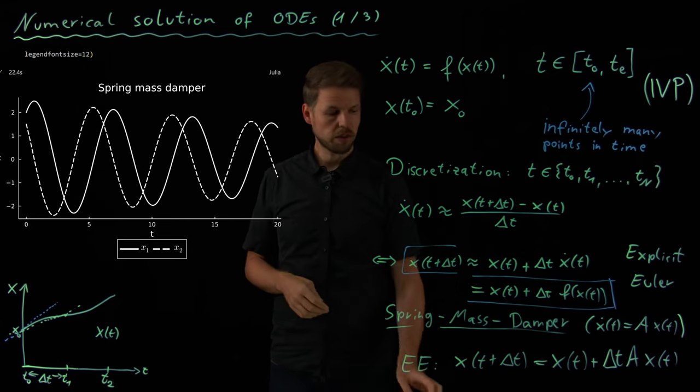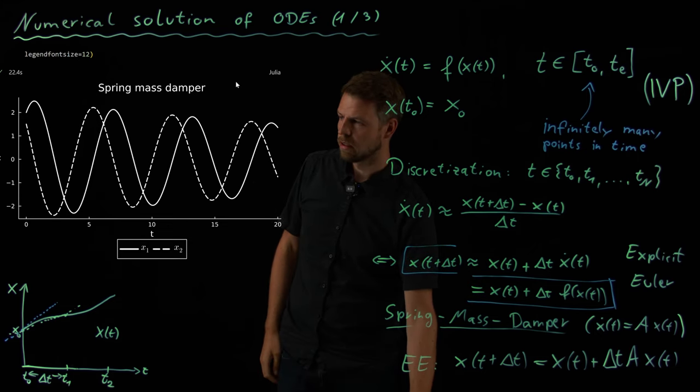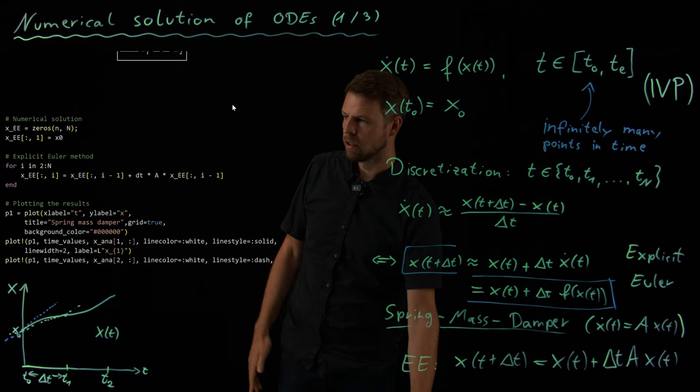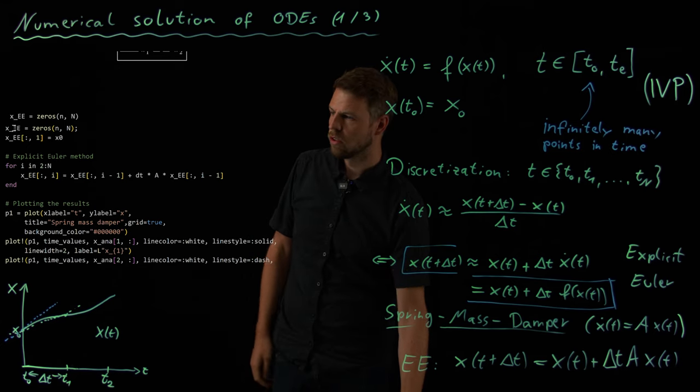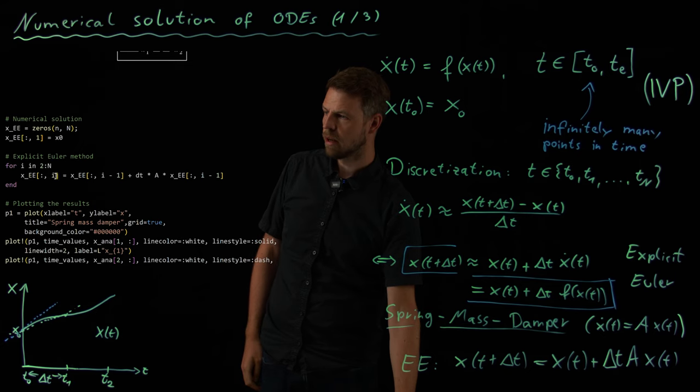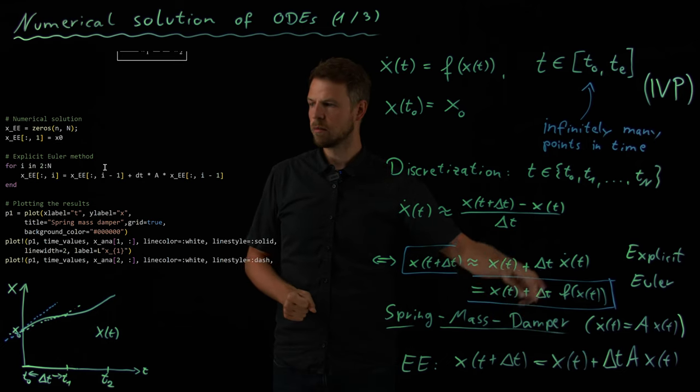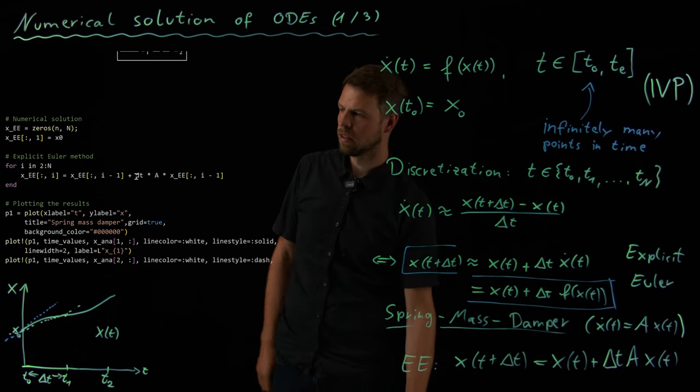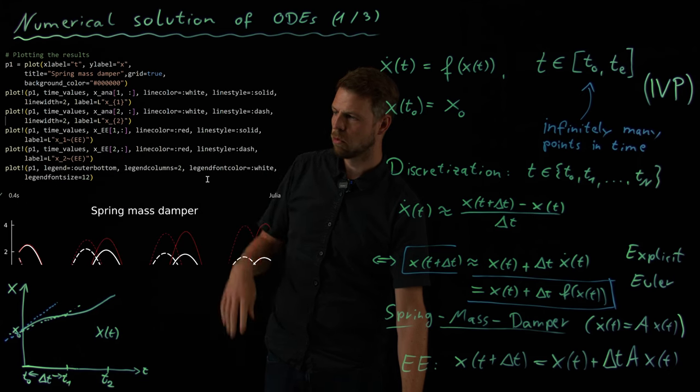And we also see this decay due to the damping. Okay, now let's compare this to the explicit Euler scheme, the one I have marked in blue here, where we see that actually the code is very, very simple. It's just one line, basically. So we have this XEE for the explicit Euler, where you see that the update rule is precisely what I've written here. We have the XEE at time step i is XEE at time step i minus 1 plus, this is the rule I've written here, DT times A times XEE at time step i minus 1.